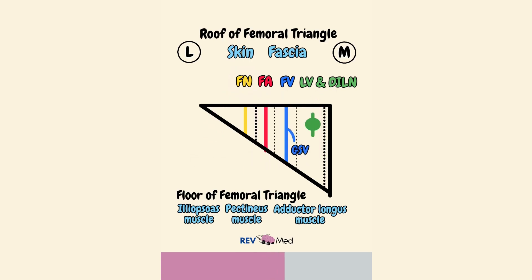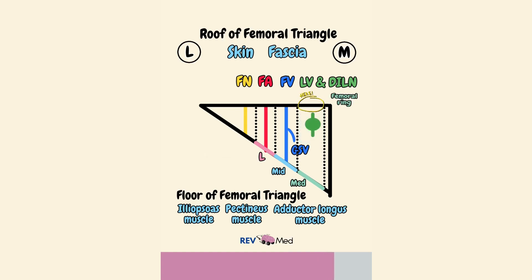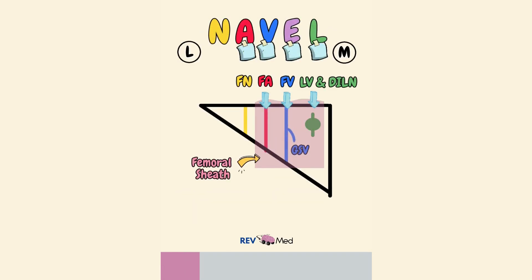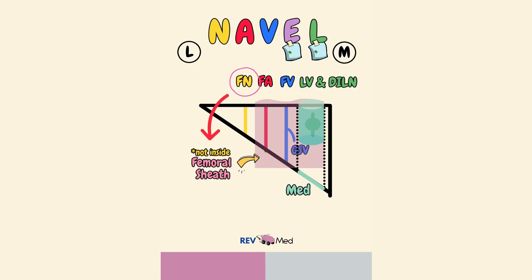The femoral sheath is divided into three parts: the lateral compartment, middle compartment, and the medial compartment. The most medial compartment is important — it forms a canal called the femoral canal, which has an opening ring labeled the femoral ring. Remember, the femoral sheath covers contents A to L, and the nerve is not included. The most medial compartment of the femoral sheath — the femoral canal — covers the E and L parts, which contains the empty space, lymph vessels, and deep inguinal lymph nodes.